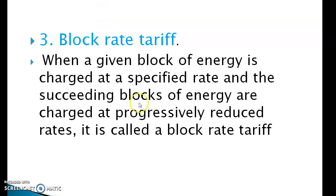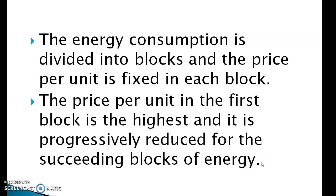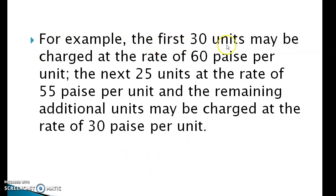Third: block rate tariff. When a given block of energy is charged at a specified rate and the succeeding blocks of energy are charged at progressively reduced rates, it is called a block rate tariff. The energy consumption is divided into blocks and the price per unit is fixed in each block. The price per unit in the first block is the highest and is progressively reduced for succeeding blocks. For example, the first 30 units may be charged at 60 paise per unit, the next 25 units at 55 paise per unit, and remaining units at 30 paise per unit.